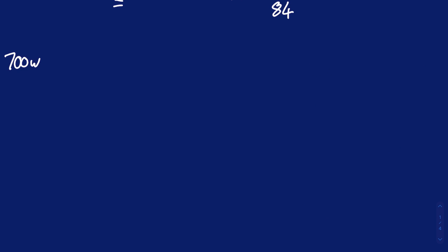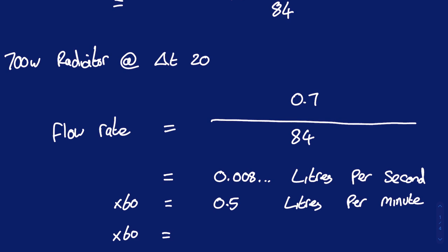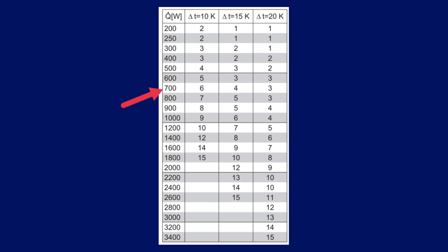Here is an example of calculating the flow rate for a 700 watt radiator with a delta T of 20 degrees Celsius. The unit for heat output is kilowatts, so a 700 watt radiator will be 0.7 divided by 84. This gives a value of 0.008 and some change, but this is in litres per second. Multiply by 60 to get into litres per minute and multiply again by 60 to get to litres per hour. So a 700 watt radiator with a delta T of 20 degrees Celsius will require a flow rate of 30 litres per hour. If we cross-check this with the chart on the box, we can see that the value needs to be set to position 3, which is indeed 30 litres per hour.